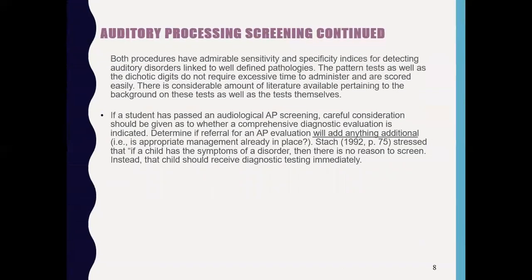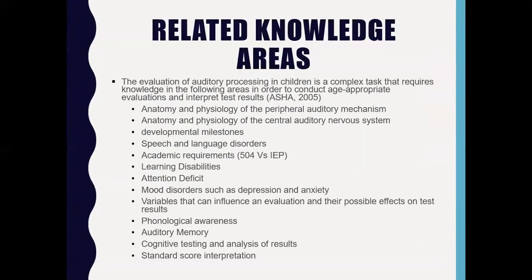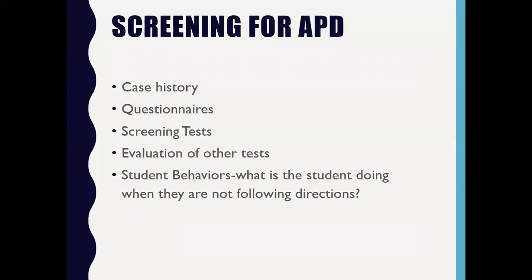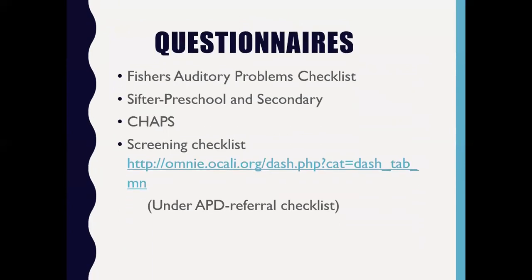There are discussion points about the sensitivity of screening mechanisms and also how much time you're spending. Options include case history information, questionnaires specifically made to look at auditory processing, published screening tests, and reviewing other evaluations. In terms of questionnaires, one commonly used is the Fisher's Auditory Problems Checklist, which has about 30 behavioral sentences that parents respond yes or no to, with a scoring mechanism on the back that gives a key indicating whether there are concerns for auditory processing.